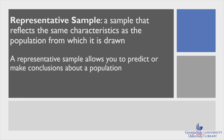Having a representative sample allows you to make predictions or gain inferences from the sample that can be applied to the population as a whole. For example, if 62% of folks from a representative sample of the United States indicated that they favor the legalization of marijuana, then it would be reasonable to predict that about 62% of the population as a whole also favors legalization.